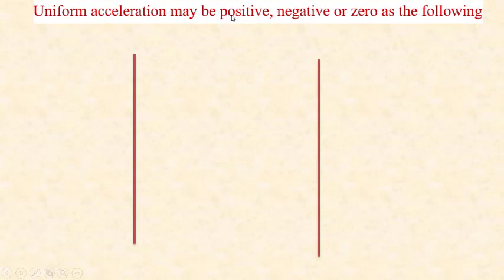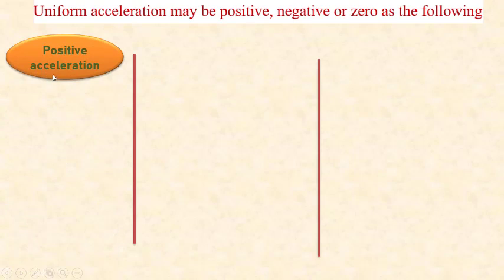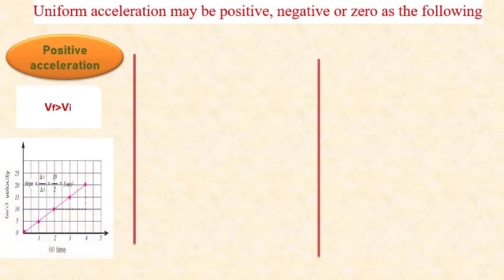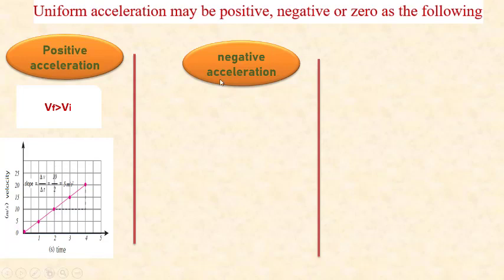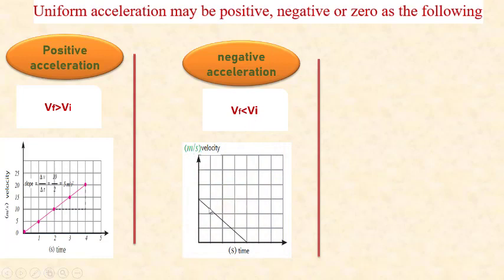Uniform acceleration may be positive, negative, or zero. Positive acceleration — or accelerating motion — has one condition: final velocity is greater than initial velocity, as the speed increases. This graph describes positive acceleration. Negative acceleration, also known as decelerating motion, occurs when the object's speed decreases, so final velocity is less than initial velocity. The acceleration has a negative sign, and this graph represents the shape of negative acceleration.